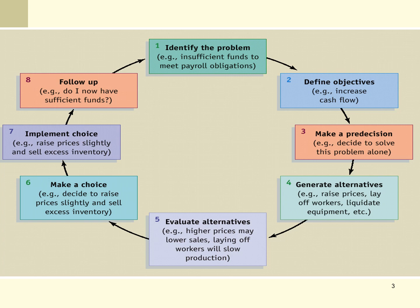Notice that in steps one through five, a decision still hasn't been made. It's a systematic process of identifying the problem, defining the objective, deciding who needs to be involved, generating alternatives, and evaluating them. Finally at step six, we make a choice — decide to raise prices slightly and sell excess inventory. Step seven, we implement the choice. And step eight, we follow up: do we now have sufficient funds? Did we attain the objective? If not, we may need to return to the problem. This is defined as a cycle — one through eight often leads back to step one.